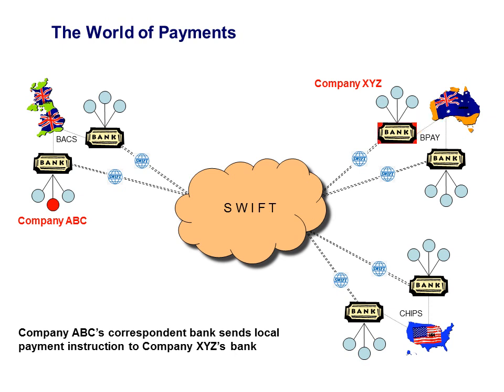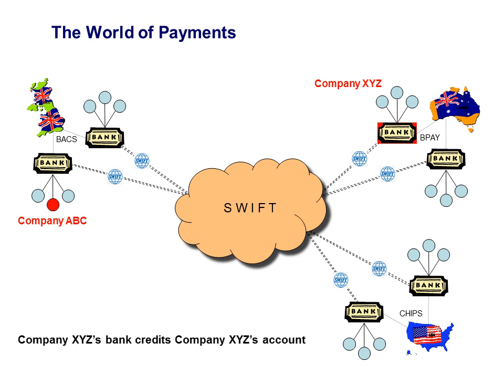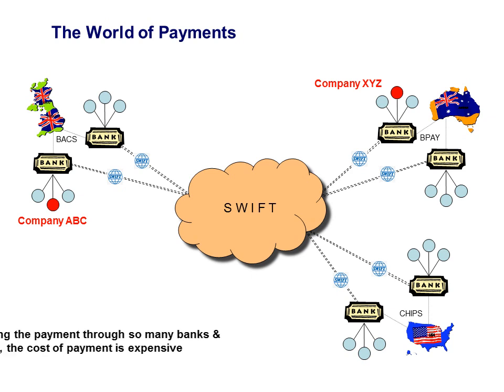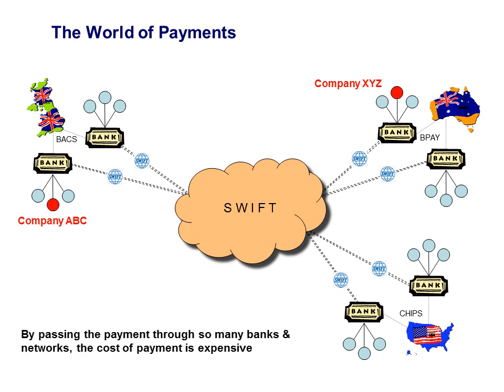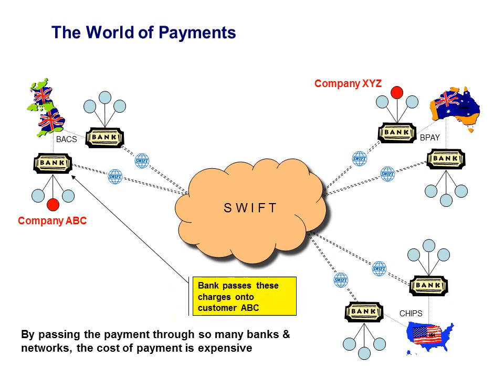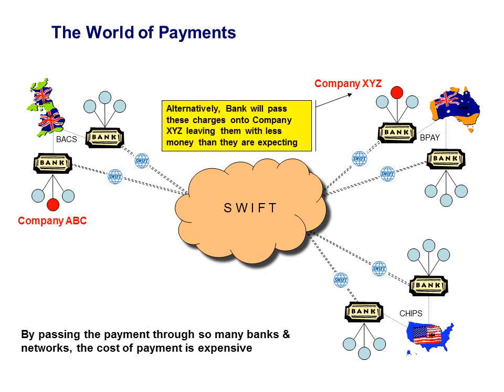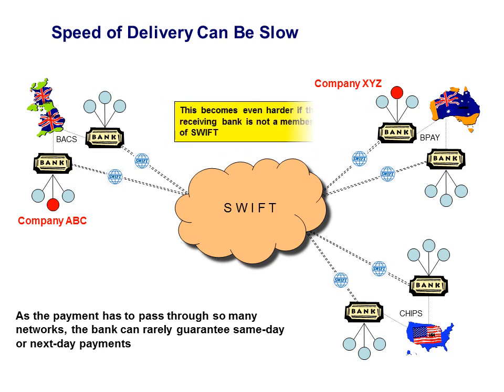Domestically, ANZ would send the money through its own domestic clearing and settlement network into the Westpac account of company XYZ. That's how it's supposed to work, anyway. As you can see through the routing here, there are many different points, so it's quite an expensive process as each one of these hops has fees involved.